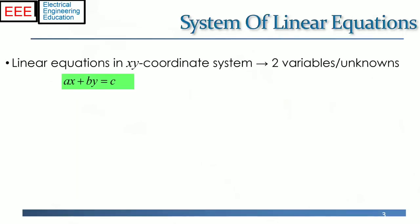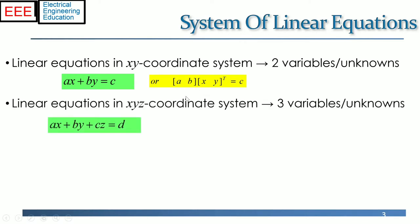For two variables or two unknowns, the linear equations in x-y coordinate system can be written as ax + by = c, or in dot product notation as the multiplication of a row vector with entries a and b and the column vector x, y, which equals c.